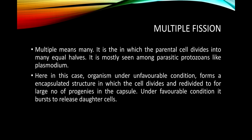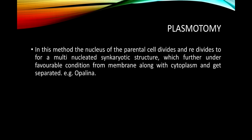Multiple fission means the parental cell divides into many equal halves. It is mostly seen among parasitic protozoans like Plasmodium. Under unfavorable conditions, the organism forms an encapsulated structure in which the cell divides and re-divides to form a large number of progenies. Under favorable conditions, when the capsule bursts, it releases the daughter cells to infect new host cells.